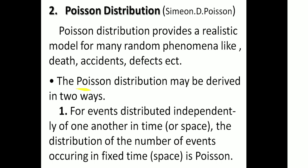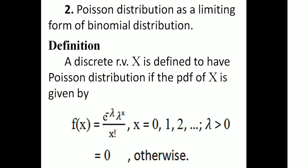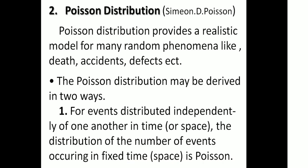The Poisson Distribution may be derived in two ways. First one: for events distributed independently of one another in time or space, the distribution of the number of events occurring in a fixed time or space is Poisson. Second one: Poisson Distribution has a limiting form of binomial distribution. These are the two types from which Poisson Distribution is derived.